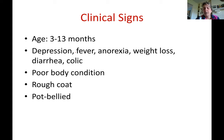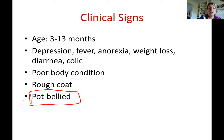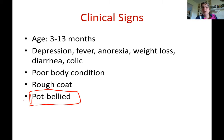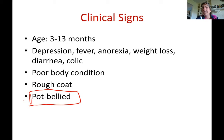These young horses should be growing but they're not, so we see poor body condition and a rough hair coat. A very common finding is edema — of the legs, abdomen, and head. This happens because the blood loses a lot of protein, and when the blood doesn't have the colloidal capability to keep protein and fluids inside the vasculature, those fluids move to the extremities. So edema of the legs, face, and belly is a hallmark clinical sign.